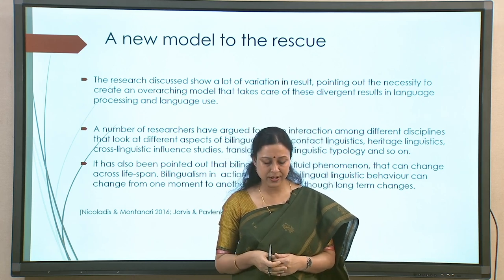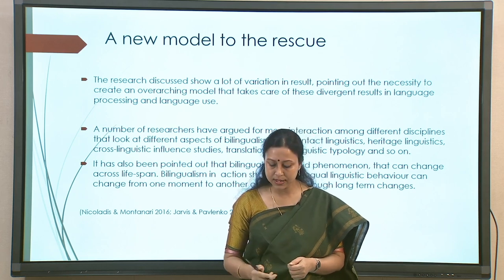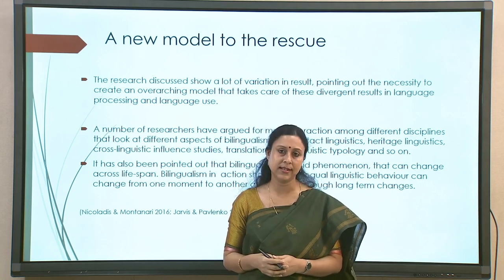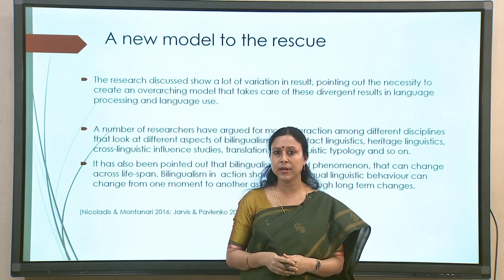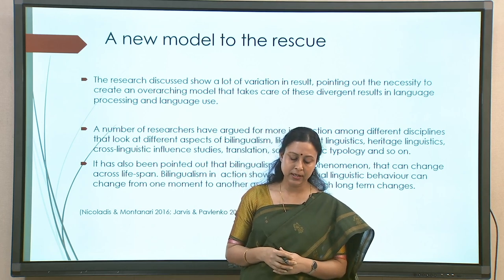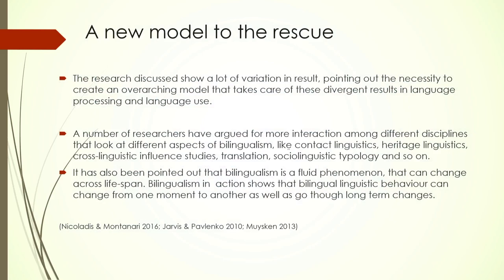Because of all of these divergent results, researchers have started looking at bilingualism taking into account many other factors which may not necessarily be part of the psycholinguistics of bilingualism. When you talk about the cognitive and psycholinguistic aspect of bilingualism, there are many things that are probably going unnoticed — that is the current feeling. Different aspects of bilingualism like contact linguistics, heritage linguistics, cross-linguistic influence studies, translation, and sociolinguistic typology are some other areas that have now been proposed as allied fields. When looking at bilingual language processing, we probably cannot anymore ignore these subdomains of language studies where these other factors are also taken into account.